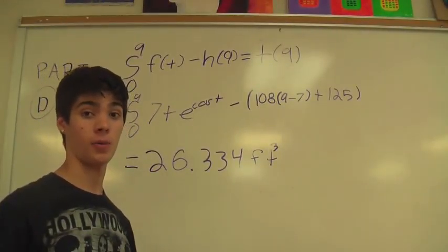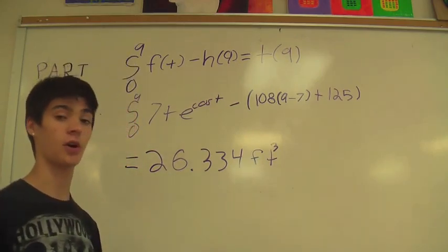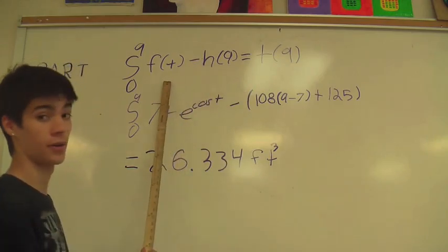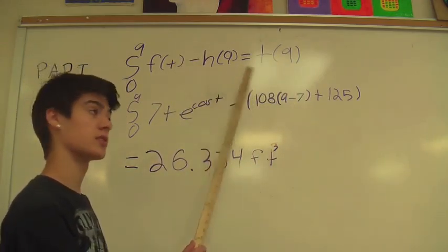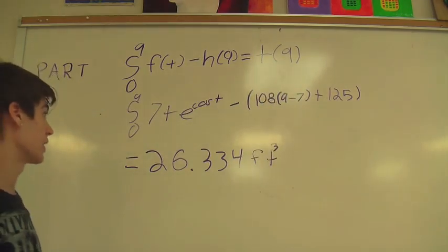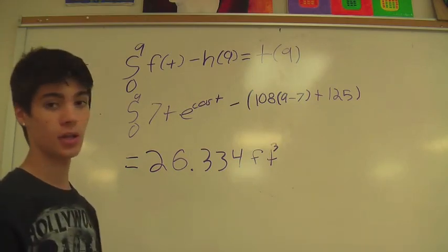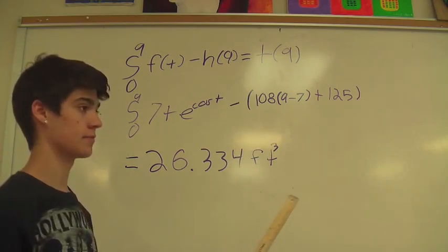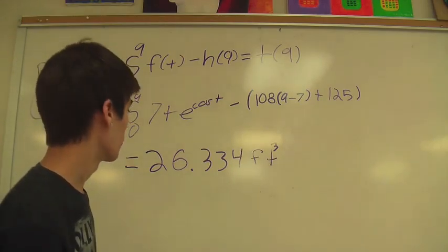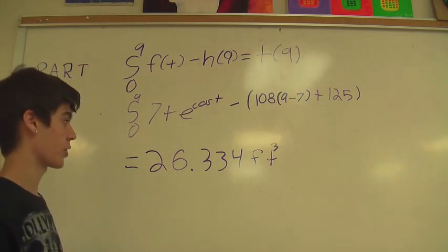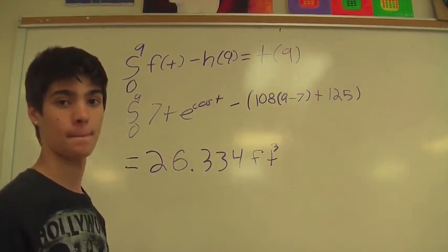For the final part of the problem, we had to figure out how much snow was on the ground at 9 a.m. To do this, we took the total amount of snow that had accumulated and subtracted the total amount that Bob had shoveled. We took the integral from 0 to 9 of 7t e to the cosine of t minus 108 times 9 minus 7 plus 125. We got 26.334 cubic feet of snow that was on the ground at 9 a.m.